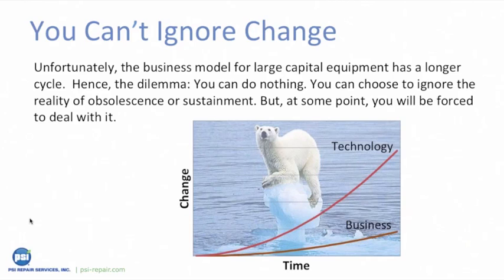You can't ignore change — it's constant. But the problem with this cycle in the business world versus the consumer world is that business models for capital equipment are based on much longer cycle times. The graph illustrates the rapid increase in technology in contrast to most large capital equipment business models. You can choose to ignore the reality of obsolescence, but at some point you'll be forced to deal with it — even the most powerful among us can be left out in the cold.